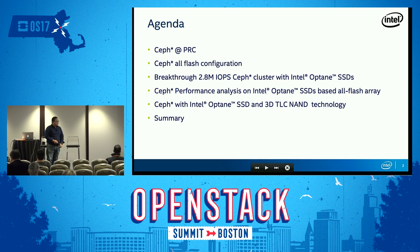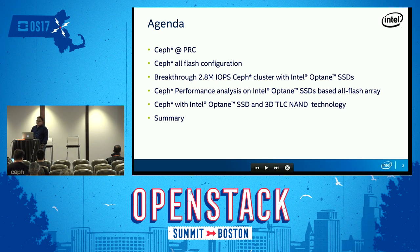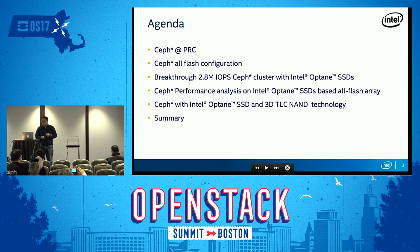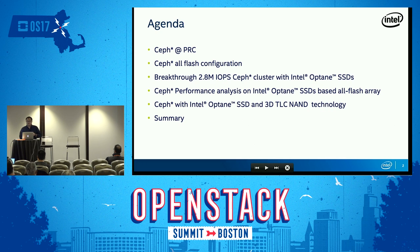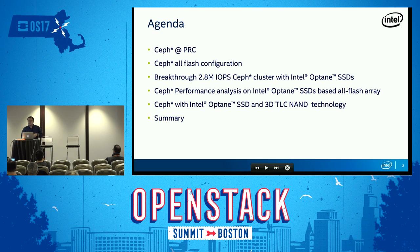Here's the brief agenda. First I'll talk about Ceph in China, then I'll cover the all-flash configurations we proposed — three kinds. Next, we have Optane launched in April and the TLC 3D NAND SSD launched just last week. I'll show the 2.8 million IOPS we achieved on our reference architecture, and demonstrate how Optane improves Ceph cluster performance. After that, we'll show scalability analysis, current bottlenecks, and how this reference architecture will evolve with Optane and 3D TLC NAND technology.